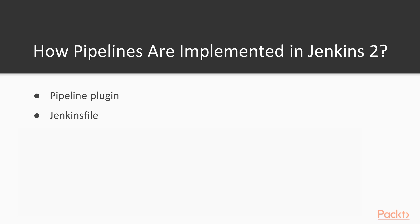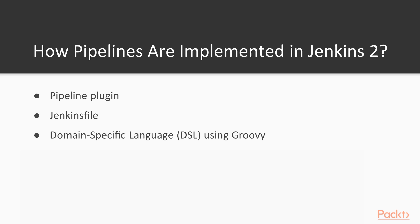We will cover Jenkins files in the next video. The Jenkins file is written using a domain-specific language based on Groovy, which is a scripting language for the Java Virtual Machine (JVM). Code written in Groovy can also be stored in libraries that can be shared across different pipelines. Finally, the whole pipeline can be visualized in real-time using a stage view automatically generated from the Jenkins file.